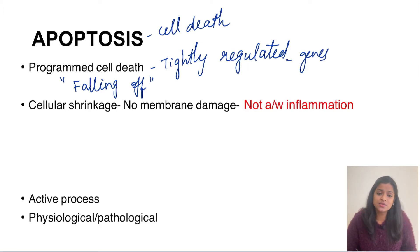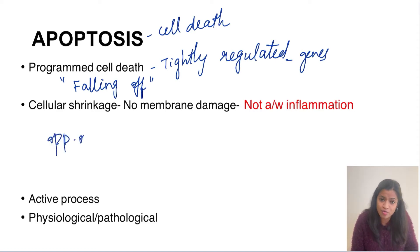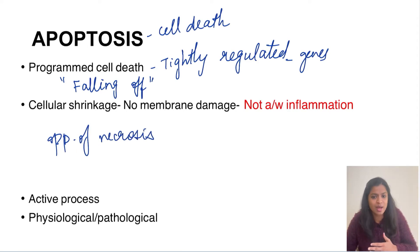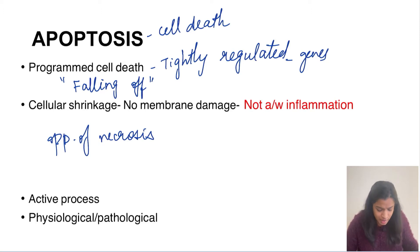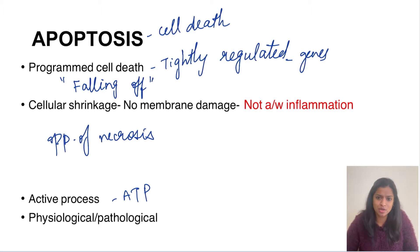The characteristic features of apoptosis: the cell will shrink and there will be no membrane damage. When no membrane damage is present, it will not lead to any inflammation. This is the opposite of necrosis — in necrosis the cell swells up, the membrane is damaged, and that invites inflammatory cells. Apoptosis is an active process which uses ATP.